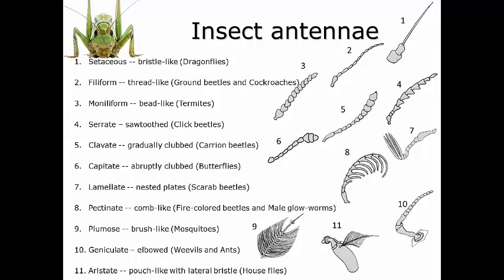There are 11 major antennae shapes you'll see over and over. The first is setaceous — bristle-like antennae found in dragonflies; very small and short. The second is filiform — thread-like antennae common in many beetles and cockroaches. These filiform antennae are very thin and mobile, which is why cockroaches can use them for tactile input as well as olfactory input.